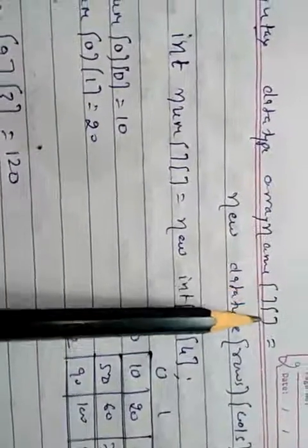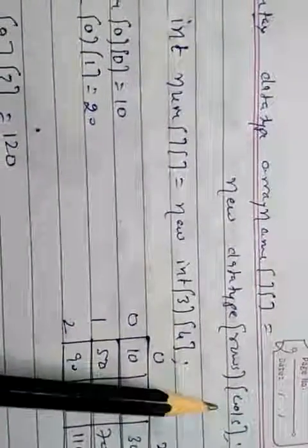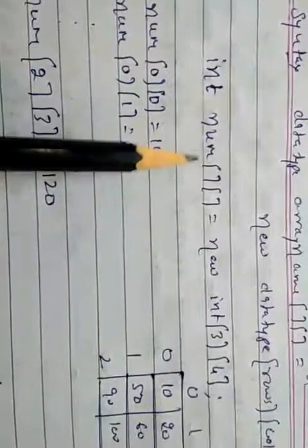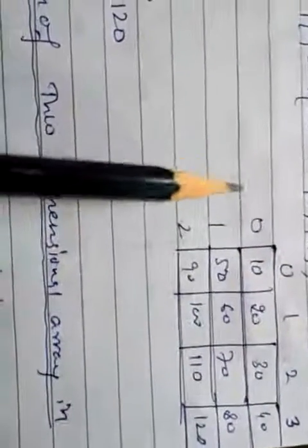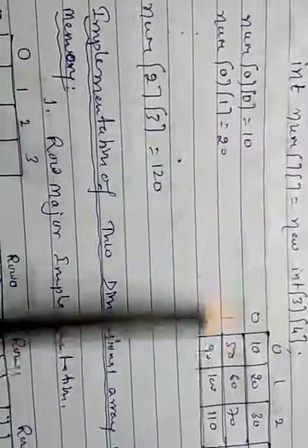Now, how will you create a two-dimensional array? The syntax is: data_type array_name[][] = new data_type[rows][columns]. One bracket is for the row and one is for the column. For example: int num[][] = new int[3][4]. This gives three rows and four columns. The row indices are 0, 1, 2 and column indices are 0, 1, 2, 3. To access elements: num[0][0] is 10, num[0][1] is 20, up to num[2][3] which is 120.